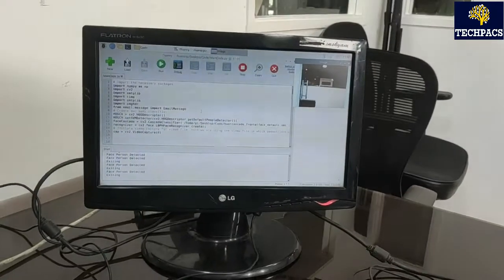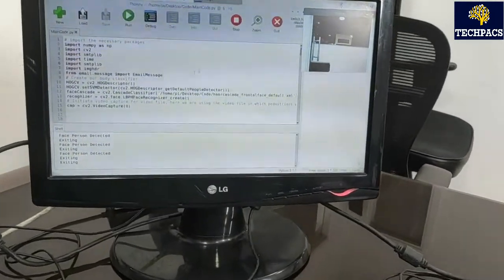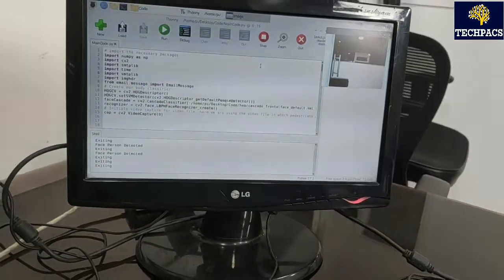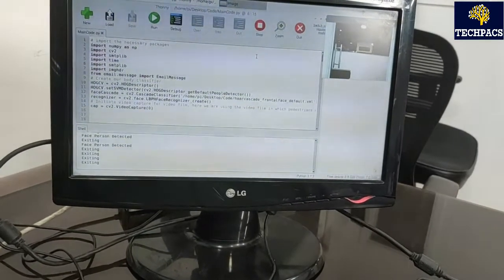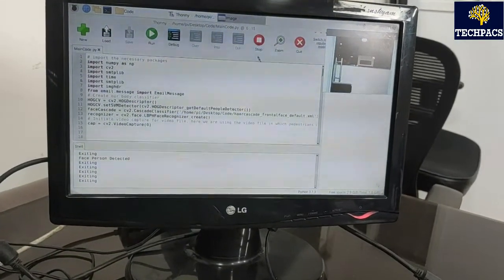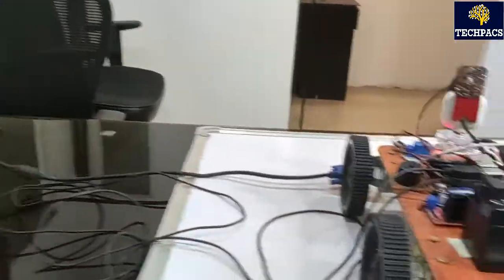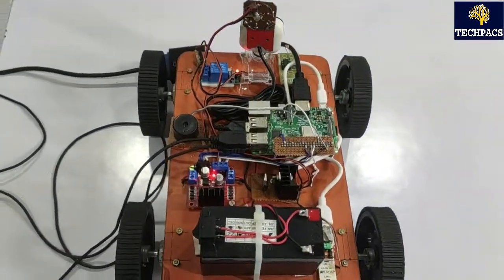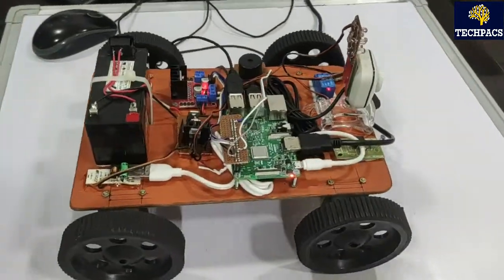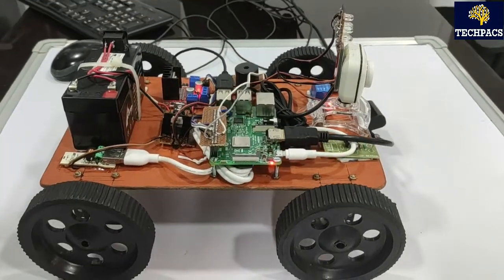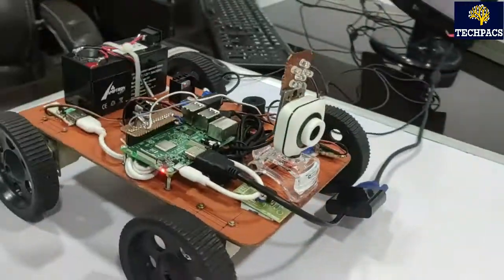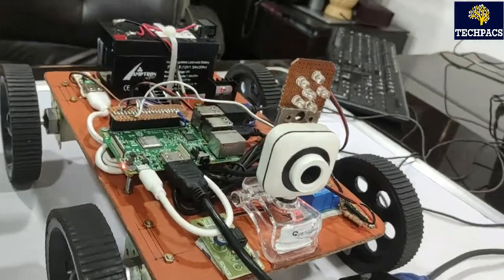This is how the software module is working for the classifier. As I already told, cascaded classifier and HOG descriptor are being used. This can also be modified further by training it ourselves. Currently I am using the XML file which is already trained in the system. This is the hardware that I am showing you.